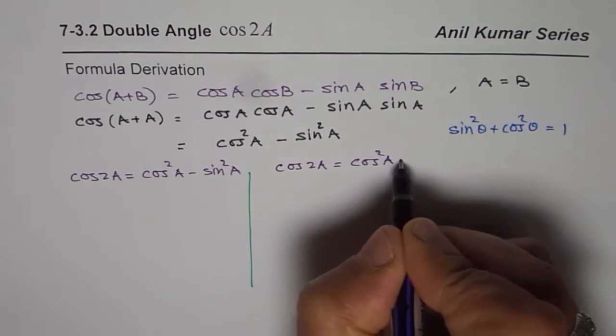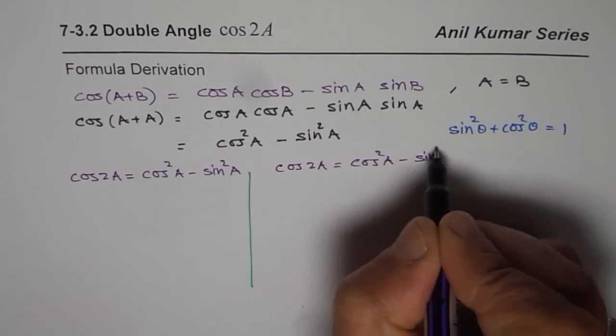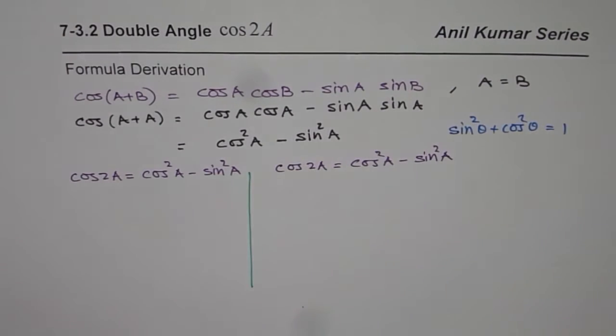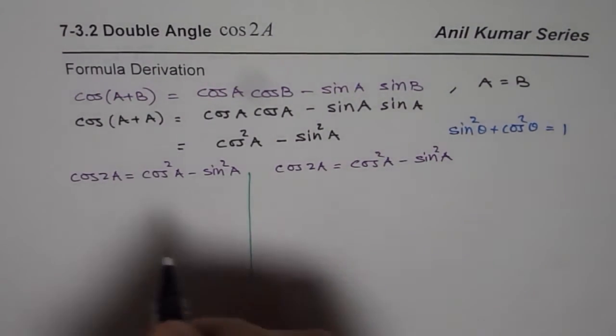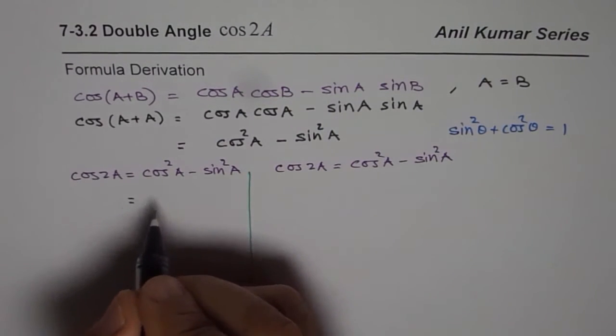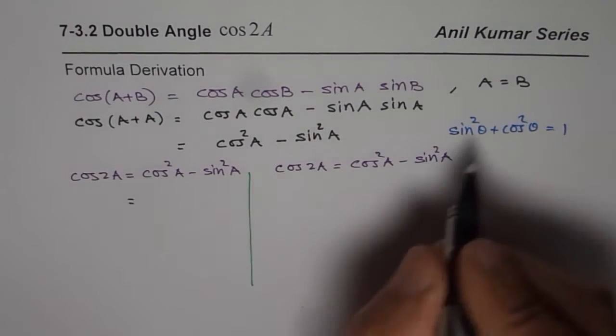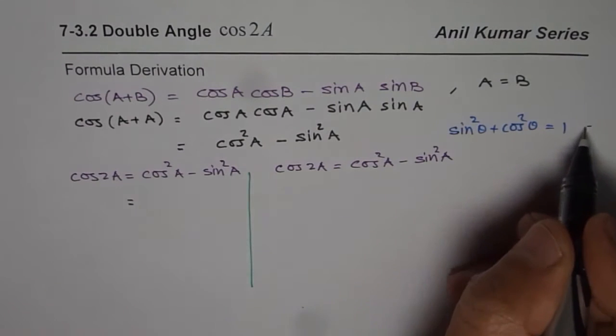There is no need to learn these formulas. That is the whole idea. You should know how to do them. That is the kind of thing which is very important. So what we will do here is instead of cos square A, I can write 1 minus sin square A.